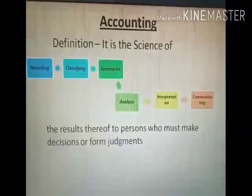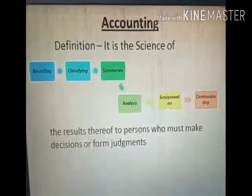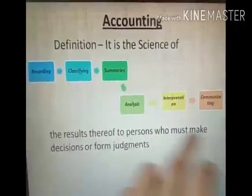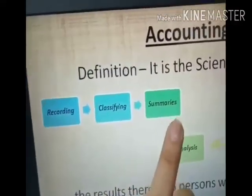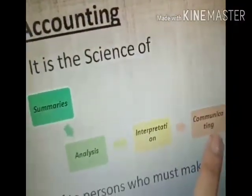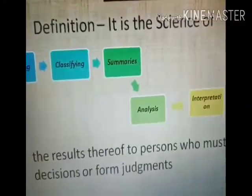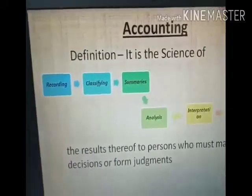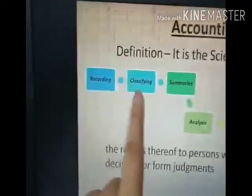If I talk about the definition of accounting, you can see I have used a flowchart. It starts from recording, then classifying, then summarizing, then analyzing, then interpretation, and then the interpretation needs to be communicated to the persons who must make decisions or form judgments. So it is a very systematic process and each step needs to be followed to reach the final stage of accounting.